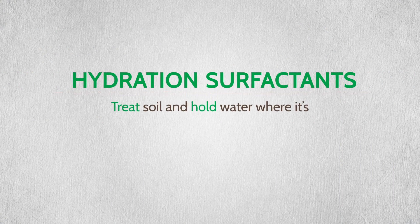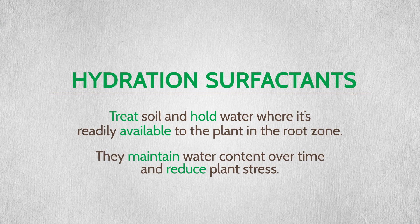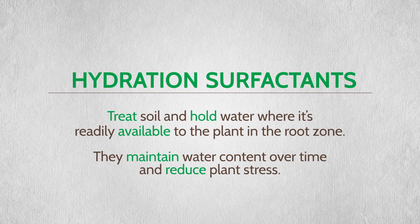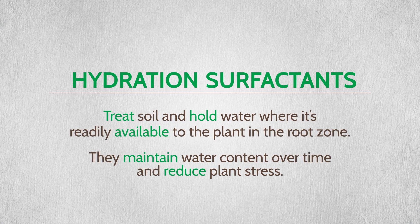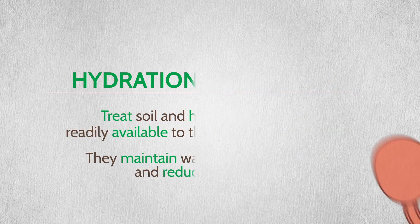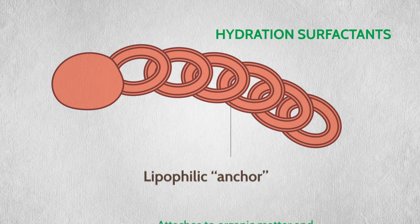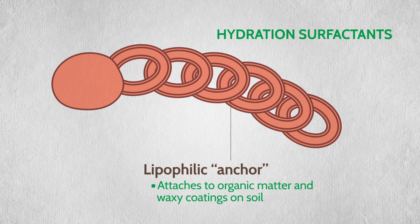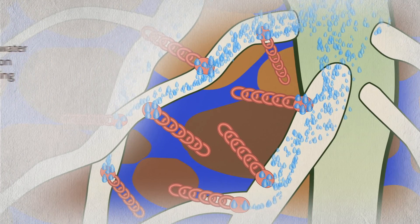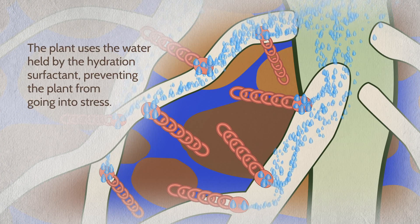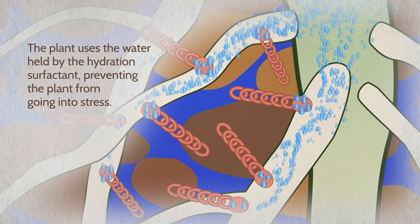Hydration surfactants treat the soil and hold water where it's readily available to the plant in the root zone. They maintain water content over time and reduce plant stress. Hydration surfactants have more lipophilic anchor that attaches to organic matter and the wax and coatings on soil particles, and a smaller hydrophilic head, which holds water available to the plant over time. The plant easily uses the water held by the hydration surfactant, preventing the plant from going into stress.